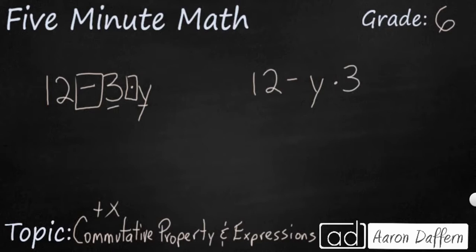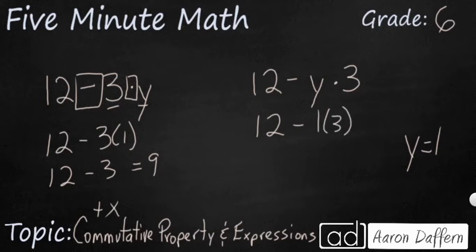Now, once again, let's just use something simple to substitute y for to see whether we're true or not. Let's just make y equals 1. That's going to be pretty simple. So 12 minus 3 times 1. Well, 3 times 1 is 3, so really it's just 12 minus 3. That makes 9. And then we have here 12 minus 1 times 3. 1 times 3, that's going to make 3. So it's 12 minus 3, and that is going to equal 9.